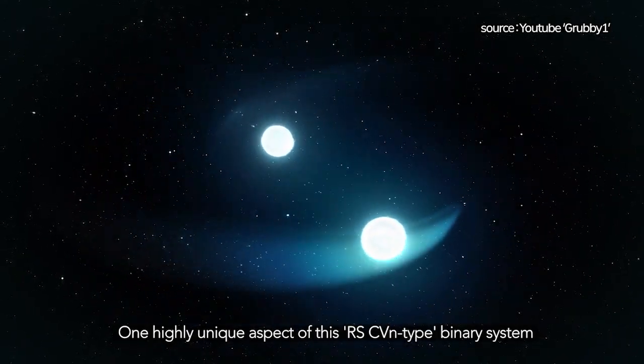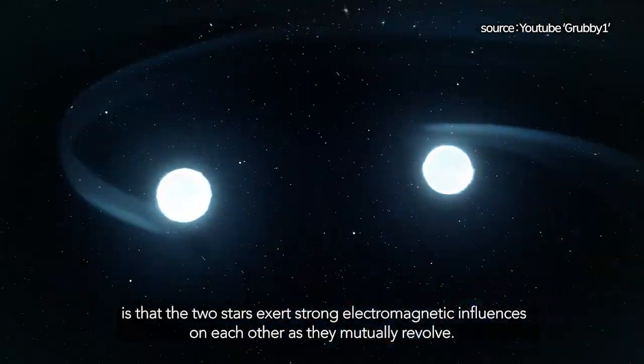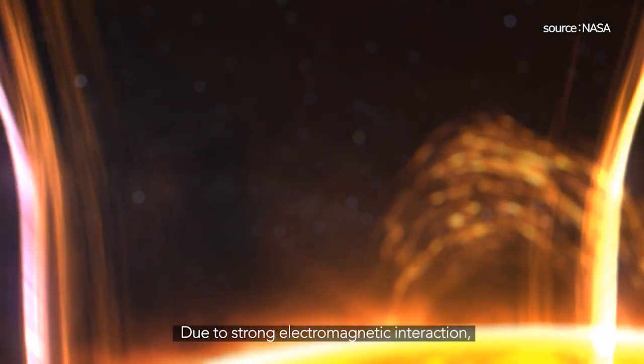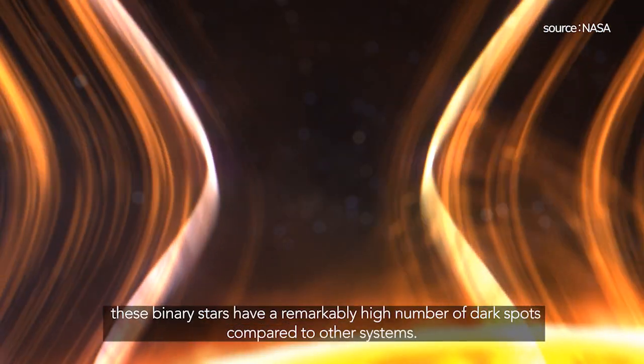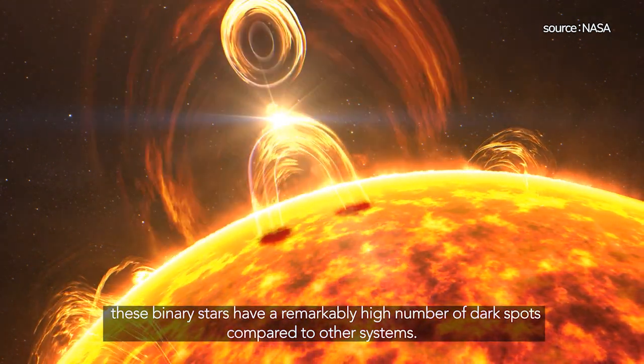One highly unique aspect of this RSCVN-type binary system is that the two stars exert strong electromagnetic influences on each other as they mutually revolve. Due to strong electromagnetic interaction, these binary stars have a remarkably high number of dark spots compared to other systems.